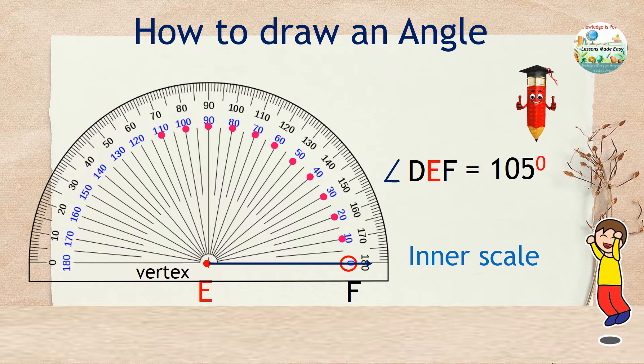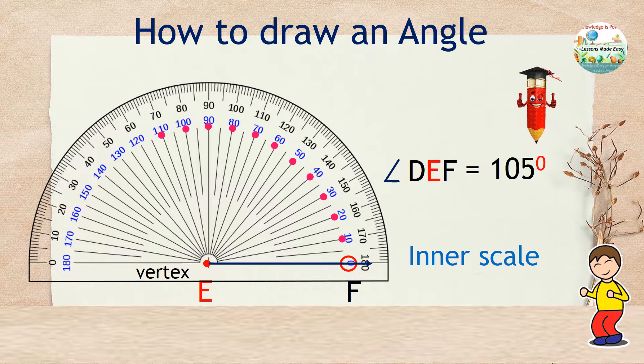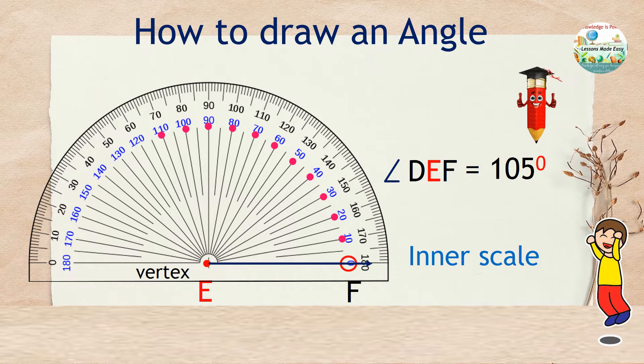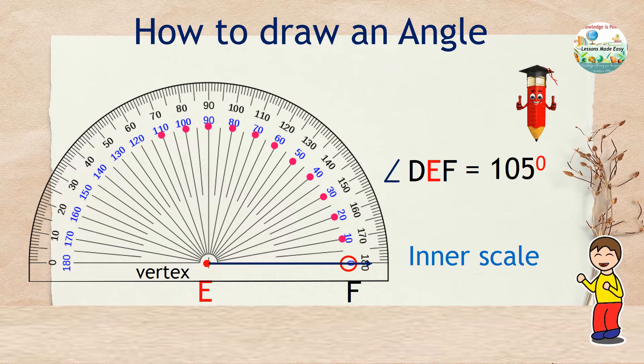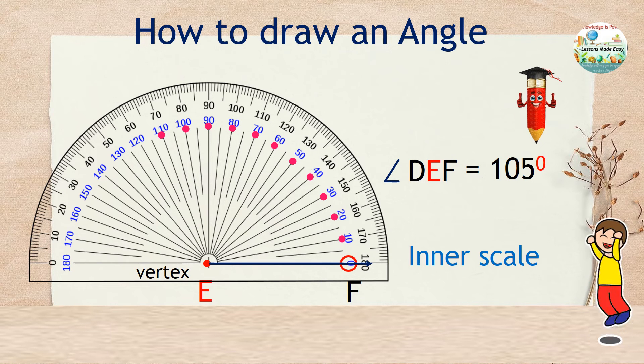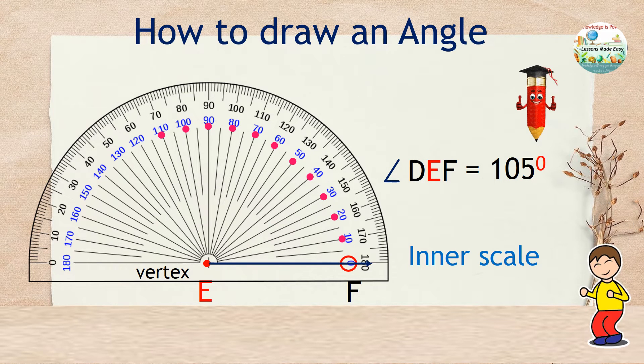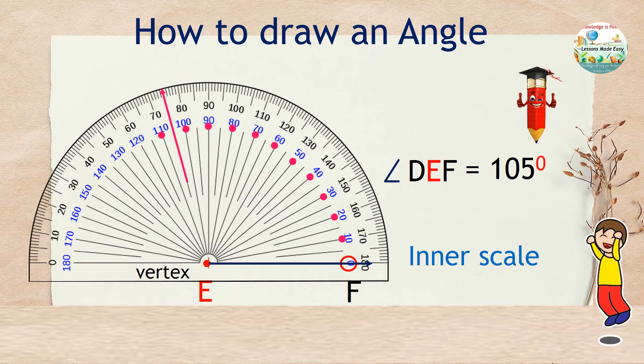But you see, there's no specific scale that says 105 because this scale is within a 10 degree interval. So where can you find 105 degrees? So it is right here between 100 and 110.